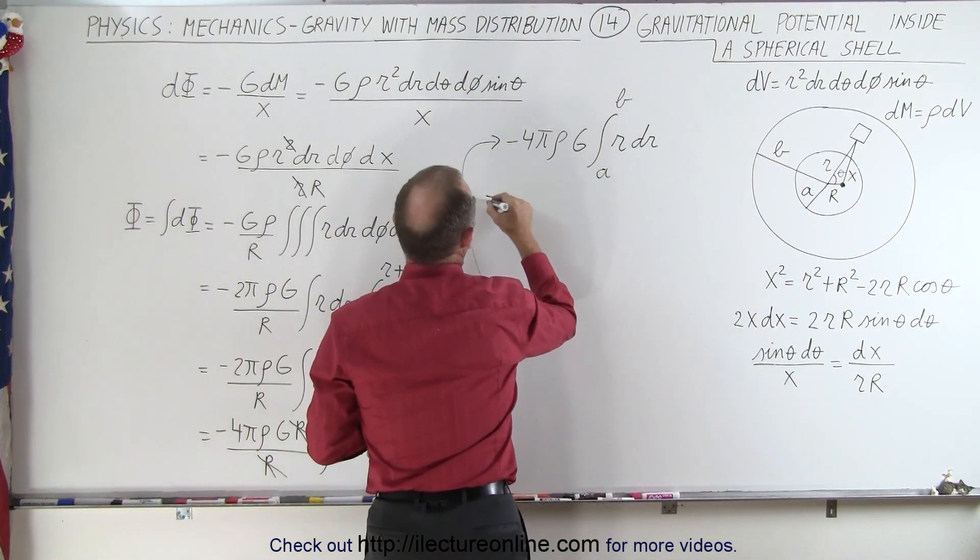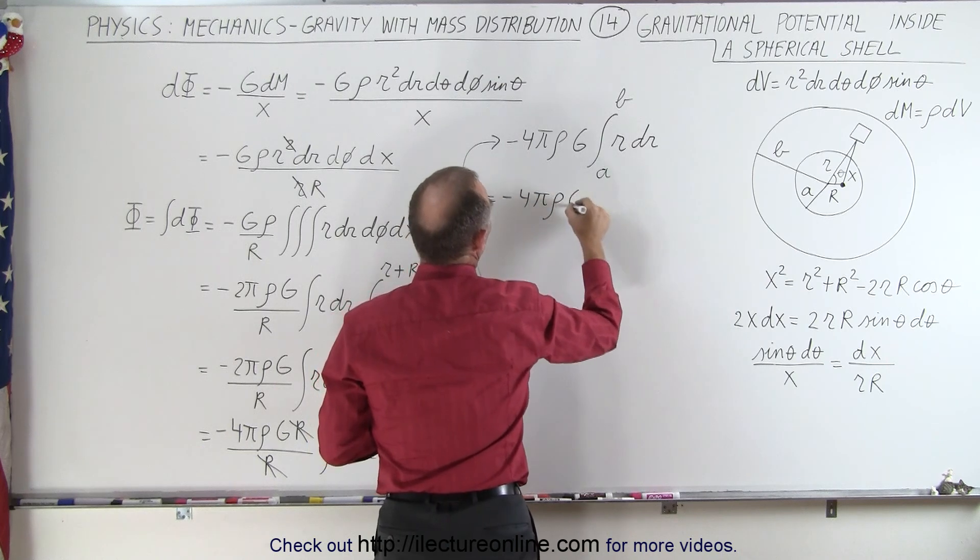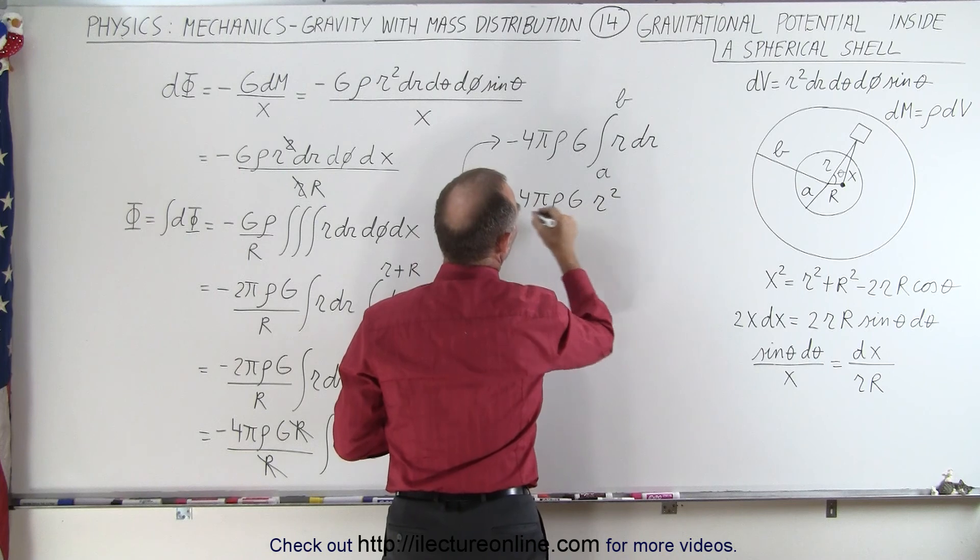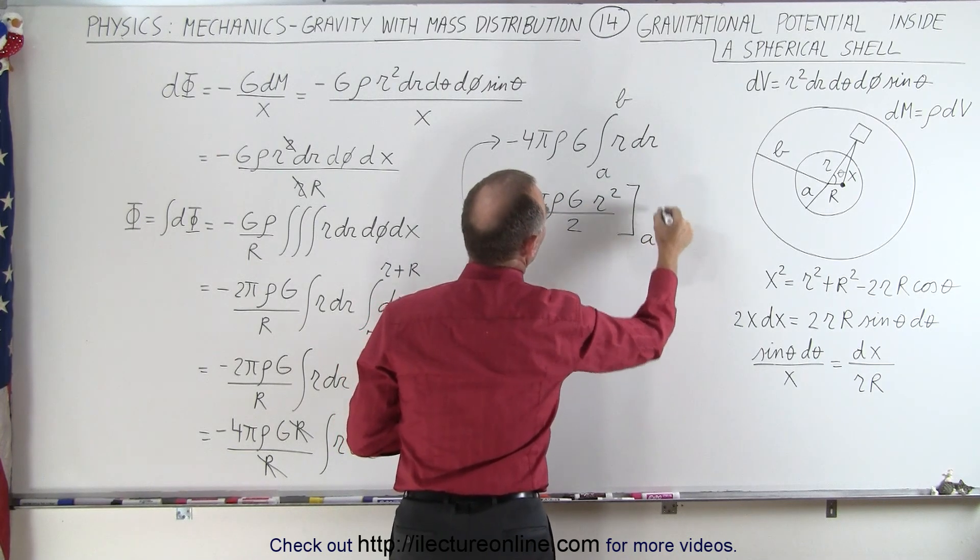So this becomes equal to minus 4 pi density g. This integral will become r squared divided by 2, evaluated from a to b.